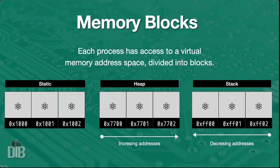That virtual address space the process sees is going to be broken up into several blocks, as we'll call them here. You may see different names — regions, sections, or segments — we'll call them blocks. There's a block I'm not showing here which holds the actual code that's going to be executed by the processor, produced by the compiler. It's placed in a section usually right at the beginning of the virtual address space. I'm not showing it here because we're not going to be interacting with that memory region directly as programmers.